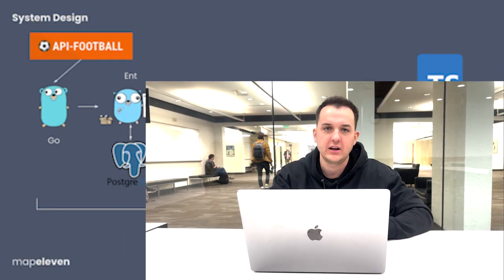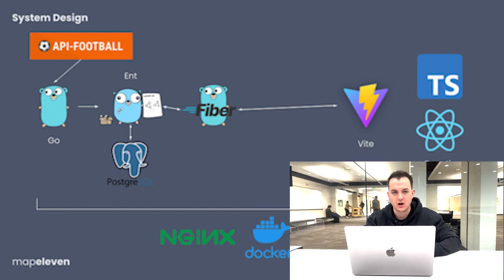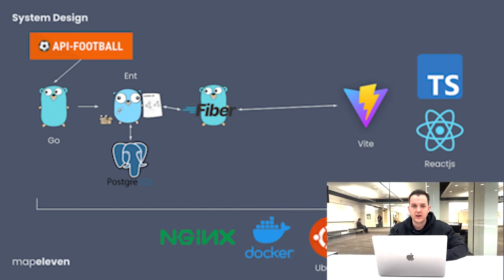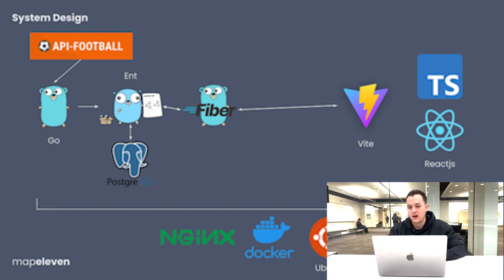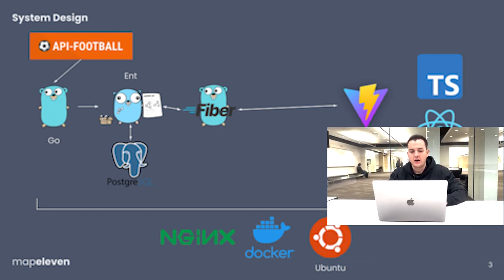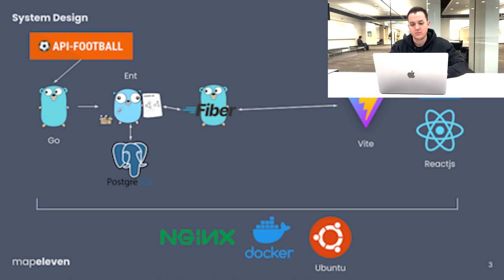Going over our system design and tech stack: we retrieve our data from apifootball.com using Go. We then employ ENT, a Go library, to store all of our data in a Postgres database. To interact with the front end and serialize the data, we're using Fiber, another Go library, which interacts with Vite to build the front end. On the front end, we're using a React.js framework as well as TypeScript. This is all containerized in Docker, and then we deployed it on an Ubuntu and Nginx server at map11.com so that anybody can access it from their mobile devices or their desktops.